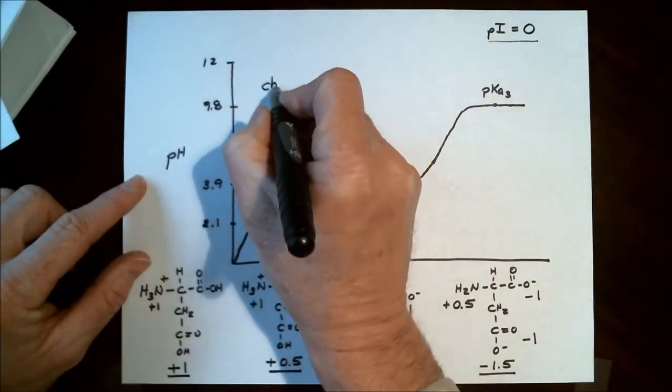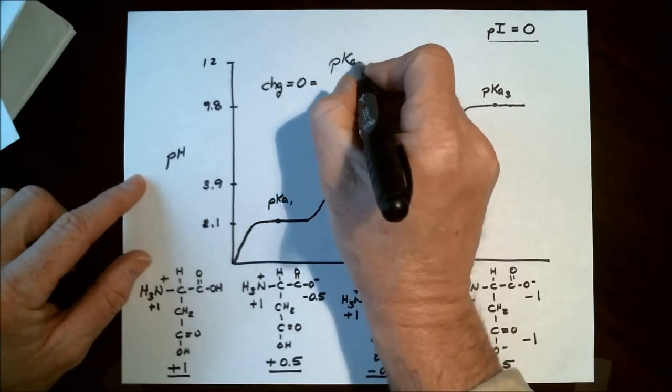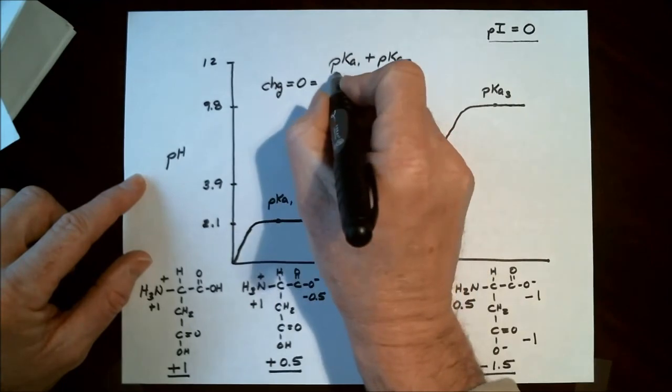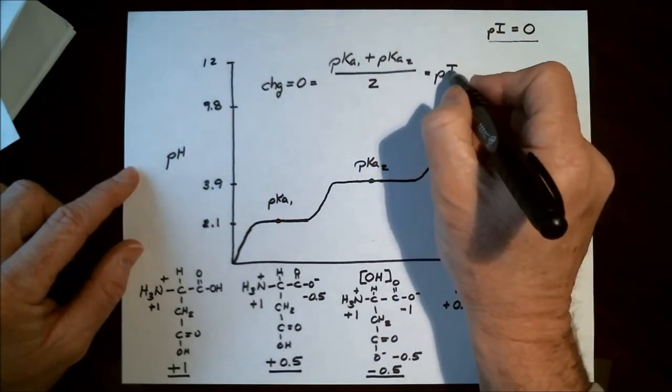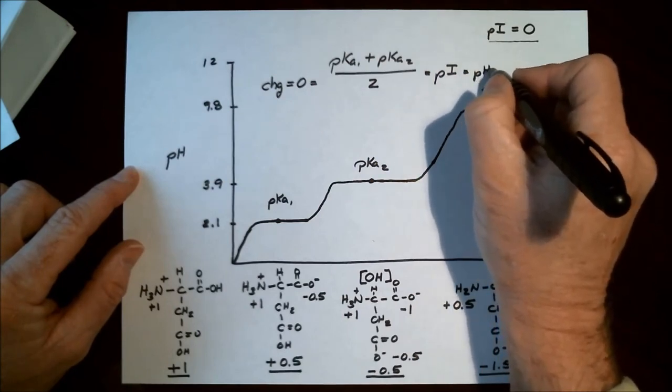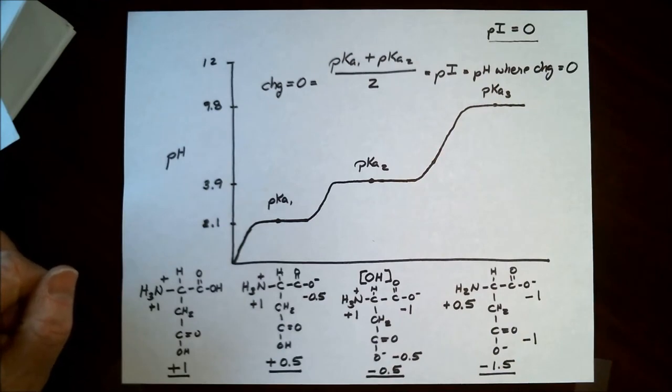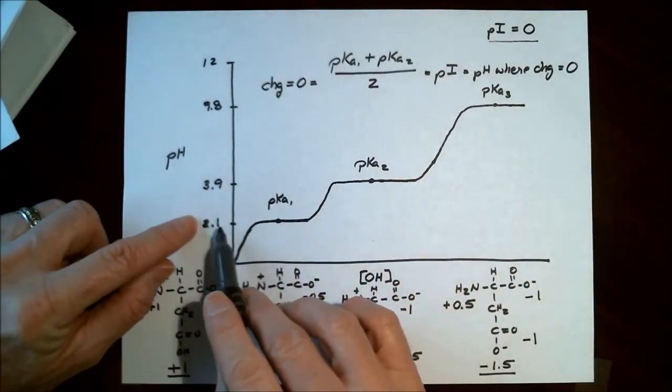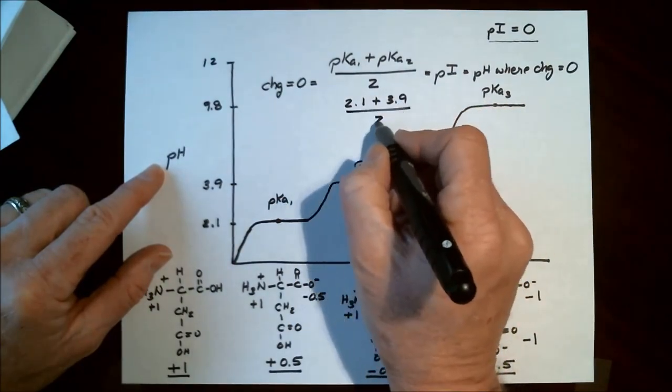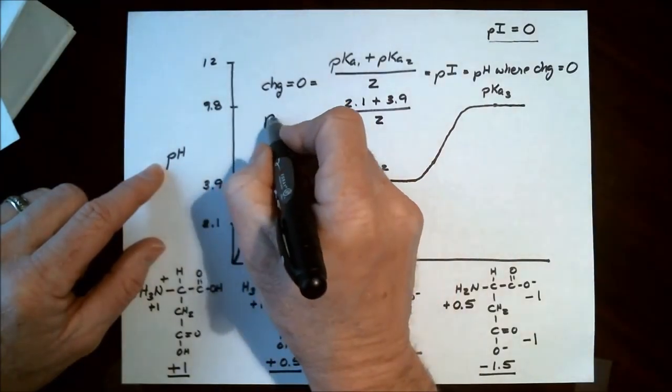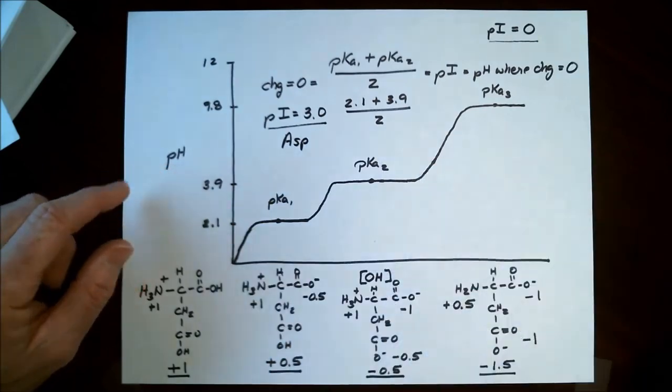So the way to calculate it is the charge equals 0 equals pKa1 plus pKa2 and halfway between those two, divided by 2, and this will equal the pI which is equal to the pH where charge equals 0. And so if we calculate this pKa which is 2.1 plus 3.9 divided by 2, we have a pI equal to 3.0 for aspartic acid.